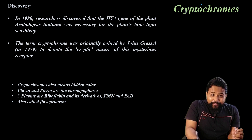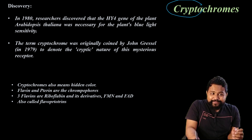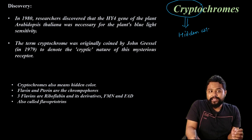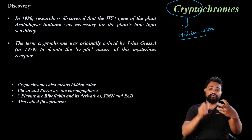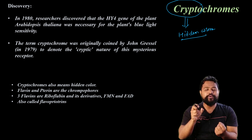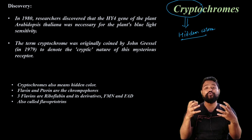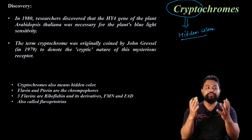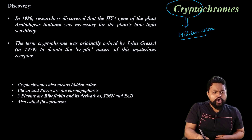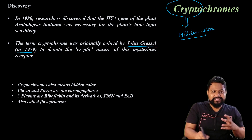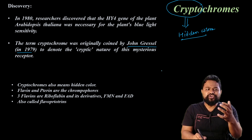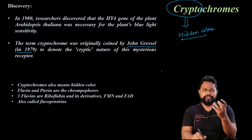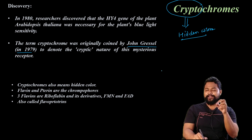Cryptochrome is a hidden color. Meaning that you can look at the color, you can absorb the color. This is Cryptochrome. The scientist John Grassell in 1979 named it based on the cryptic nature of this mysterious receptor, which we can understand as a hidden color.